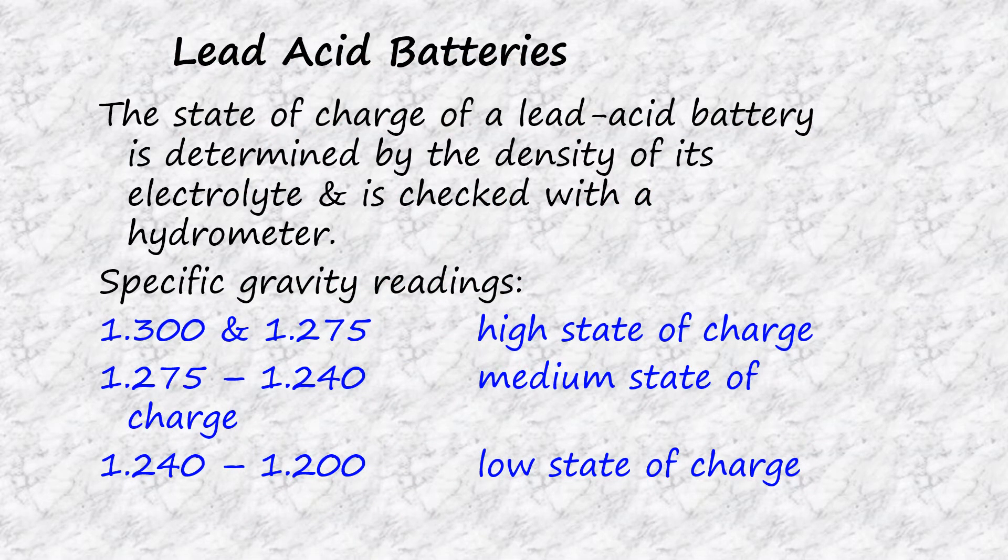Lead acid battery electrolyte has a higher specific gravity than distilled water, and the amount of it absorbed onto the plates changes as the charge of the battery changes. Higher ratios of electrolyte in the mixture will result in a higher specific gravity for the mixture. A higher specific gravity reading, as indicated on a hydrometer, will indicate a higher state of charge.